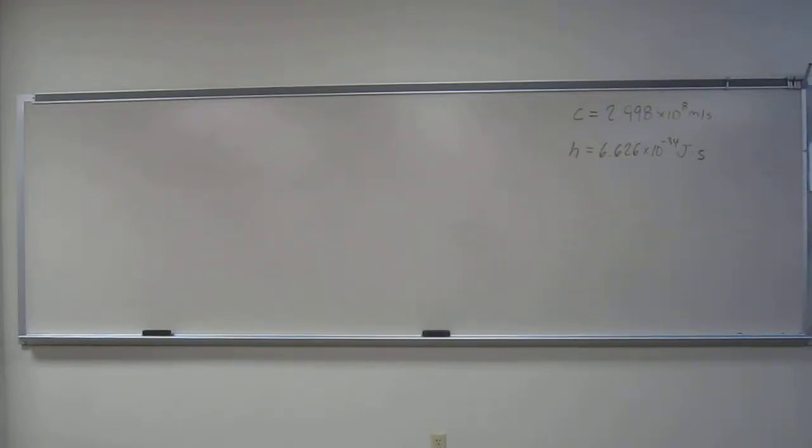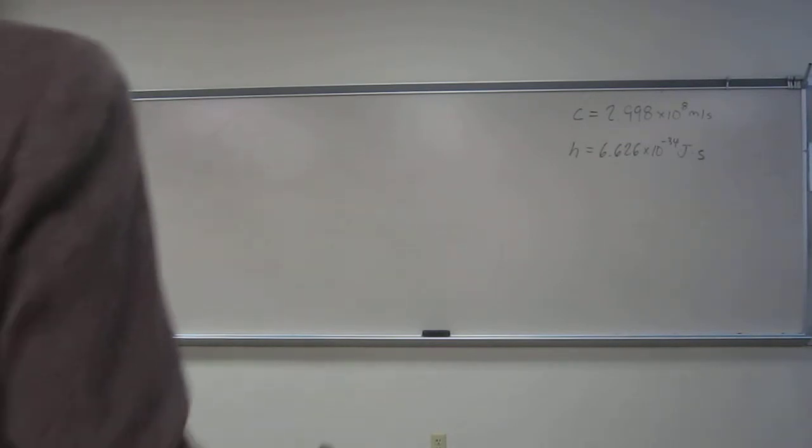So the wavelength of green light in the visible spectrum of excited hydrogen atoms is 486.1 nanometers. What is the energy of each photon? Let's do that.